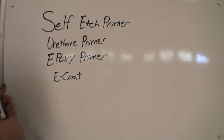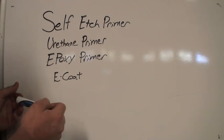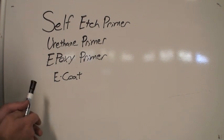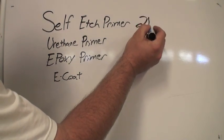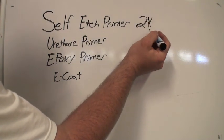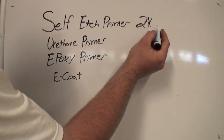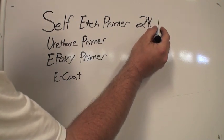At the shop we very rarely use an epoxy primer because we're more of a collision shop than a restoration shop. What we have is a self-etch primer. You can get this in a 2K, two parts would be with a hardener, or you can get in a rattle can, should be a 1K.